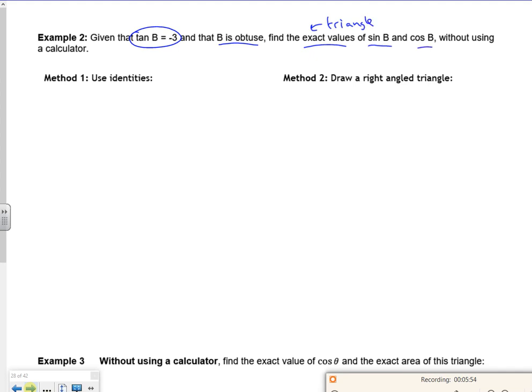I'll do method 2 first because I like that one. So even if it's obtuse, just draw a right angle triangle and pretend to ignore it there. So tan we know is opposite, which is 3, over adjacent, which is 1. So I've got 3 over 1. Using Pythagoras in your head, it's 3 squared plus 1 squared, so that's going to be root 10.